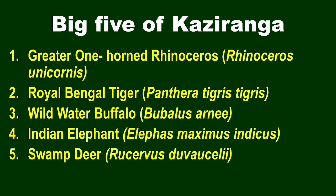The Big Five animals of Kaziranga National Park and Tiger Reserve are: Royal Bengal Tiger, Wild Water Buffalo, Indian Elephant, and Swamp Deer. These animals are collectively called the Big Five.